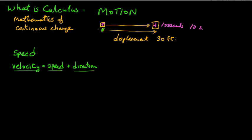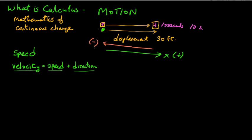A lot of people use speed and velocity synonymously, but there is a slight difference. Speed is just how fast you're going. Velocity is how fast you're moving plus what direction you're going in. If you're going left to right along the x-axis, that's the positive direction. If you're going backwards, that's the negative direction, so your velocity could be positive or negative. Speed is always positive, even if you're going from right to left.